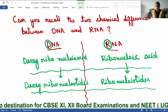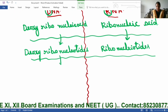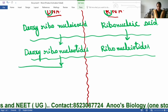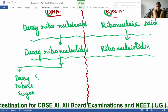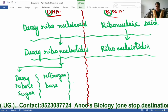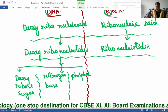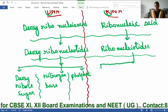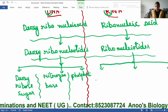Now let us see the components of each deoxyribonucleotide. Each deoxyribonucleotide is made up of three basic components: deoxyribose sugar, nitrogen base, and phosphate. Similarly, each ribonucleotide is made up of three basic components: ribose sugar, nitrogen base, and phosphate.